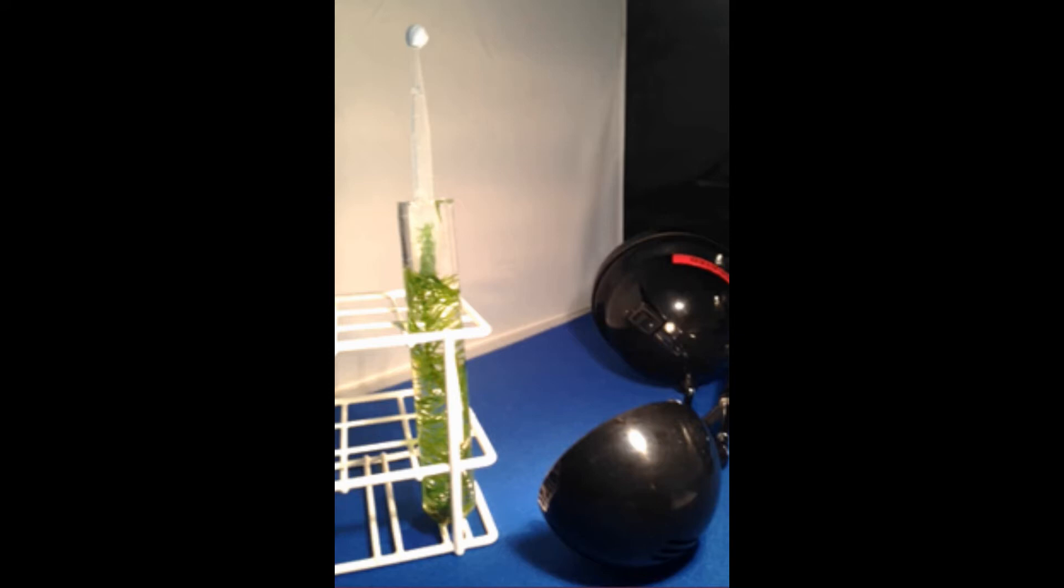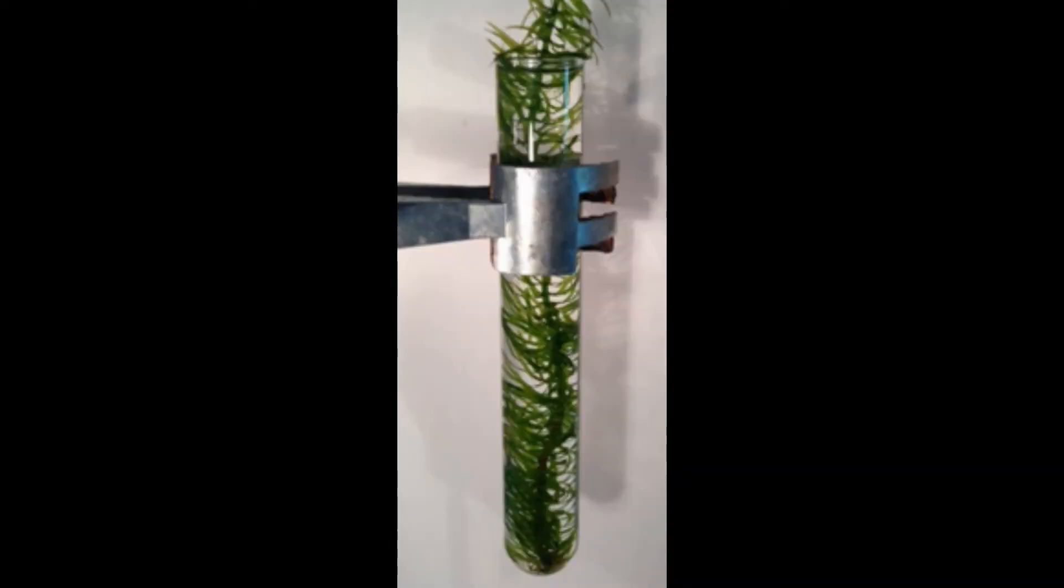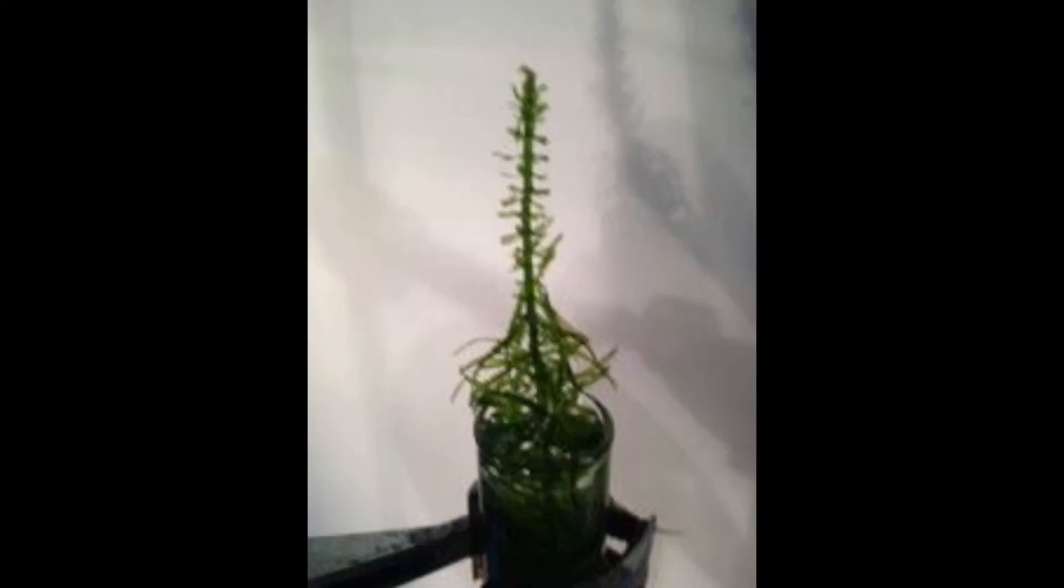To carry out individual investigations into the rate of photosynthesis, students could make their own mini-bubblers. To make a bubbler use a piece of Egeria which is at least equal to the length of a boiling tube and place the plant in the boiling tube stem end upwards. Trim the leaves exposing the final 3-4 cm of the stem.